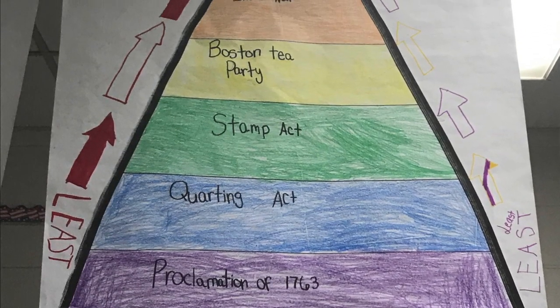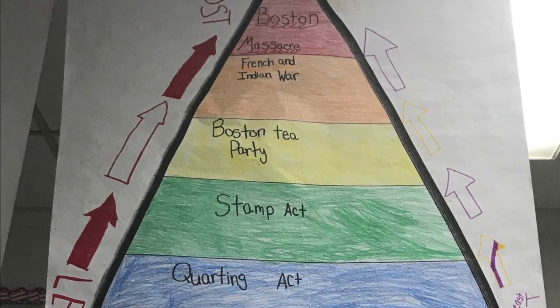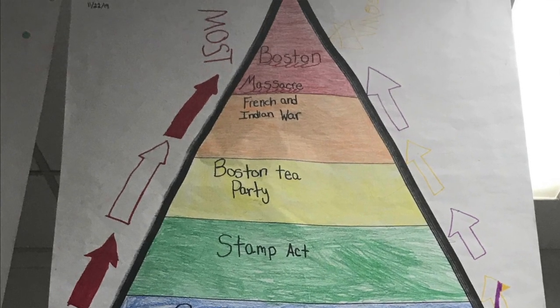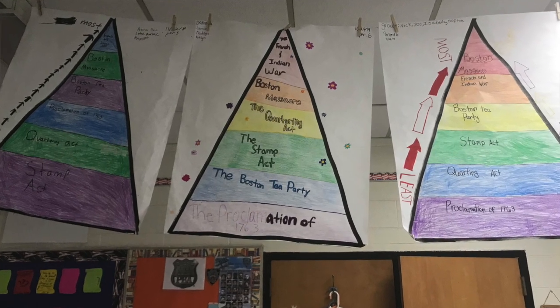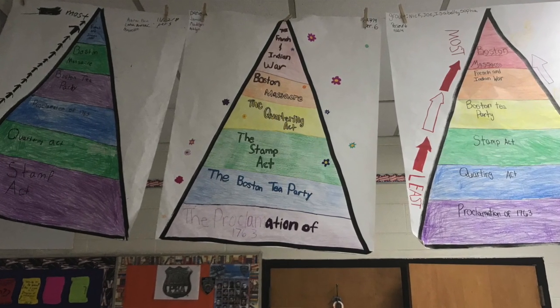They worked with their table groups and had to put the events in order from what they thought was the least impactful all the way up to the most significant. When I hung the twelve posters up, I was surprised to see that they had pretty much put them in very similar order. There is some differentiation, but they all seemed to put the Proclamation of 1763 as the least important event leading up to the tensions between the colonies.